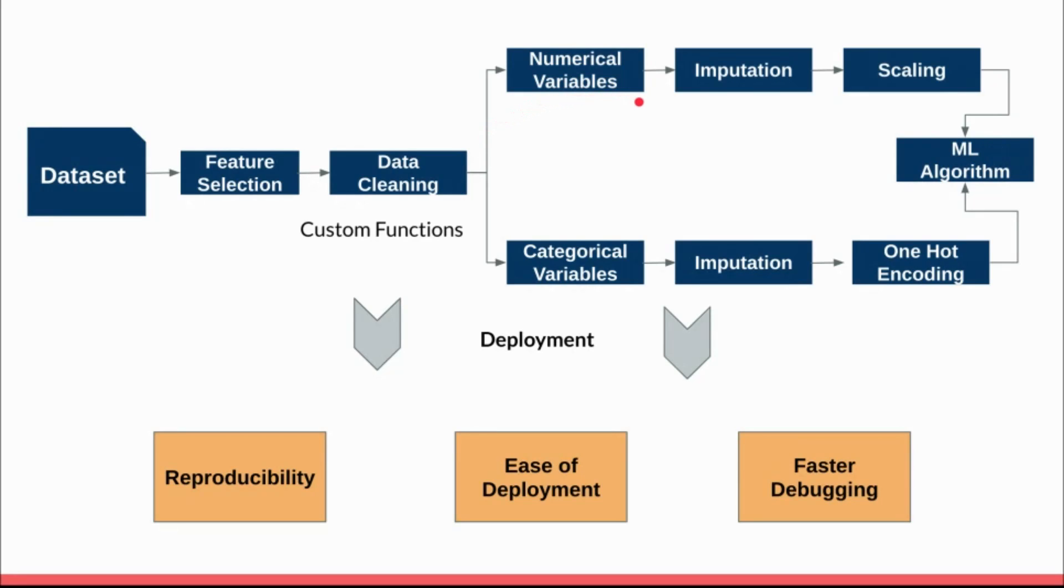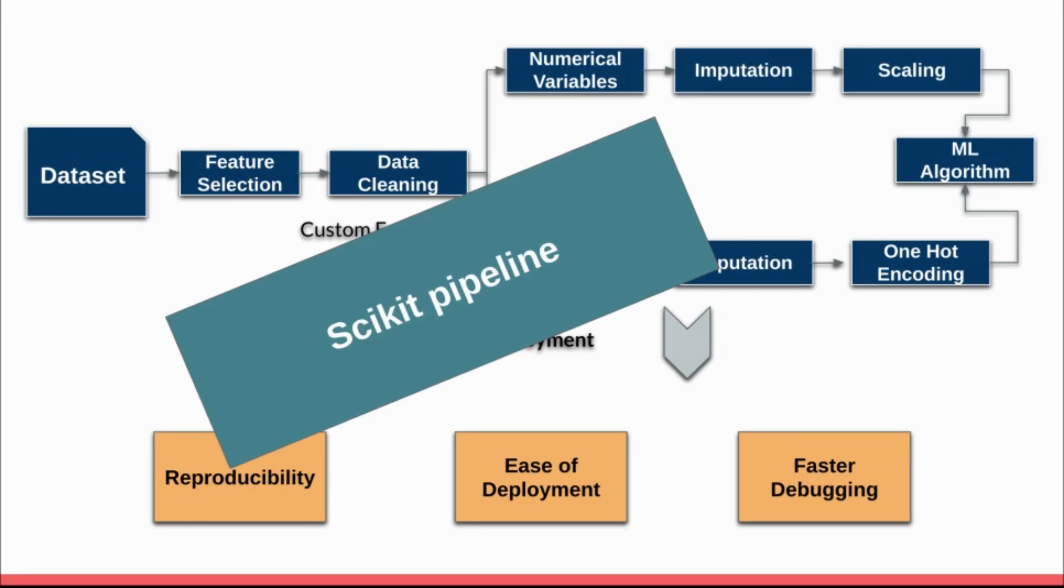When you are doing imputation or something like that, there are some learned parameters. So you have to pickle the imputation objects separately, the scaling objects separately, and then deploy them. The deployment is pretty complex and the debugging in turn is also complex because you have multiple moving parts. How can you make this pipeline pretty reproducible, make deployment easy, and enable faster debugging? That's where the scikit-learn pipeline comes into play.